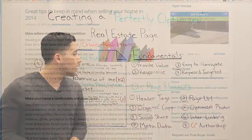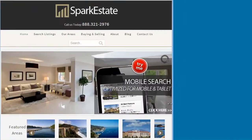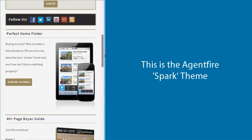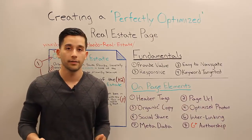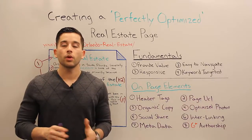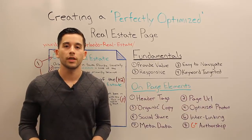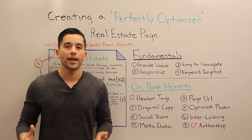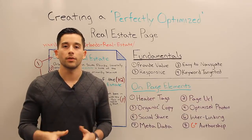Number three: responsive. I don't think I need to tell you how many people are viewing your site from a non-desktop device — an iPad, a smartphone, a tablet. It's 2014; you need to make sure your site is responsive and the content is well-served to any device. Number four: keyword targeted. Even if you don't know the specific keywords you want to target, you should have some keyword focus. Your content should sound organic and genuine, but you also need to understand what keywords to include for it to rank well.